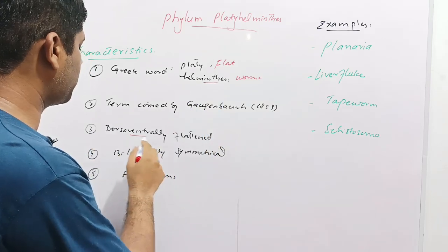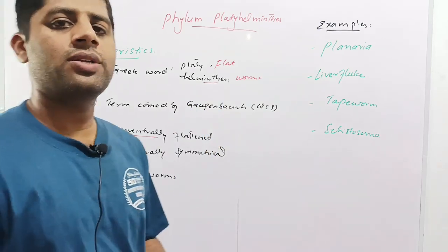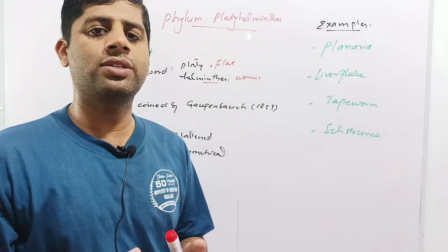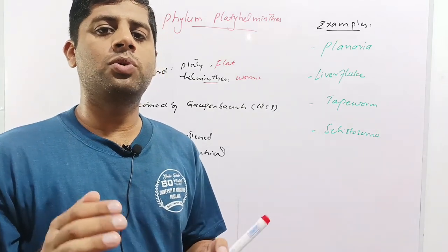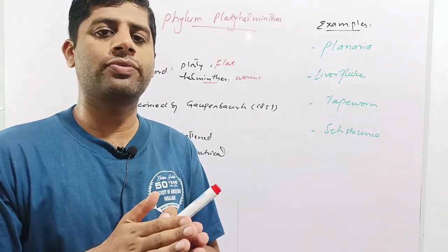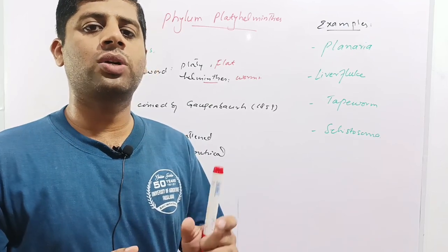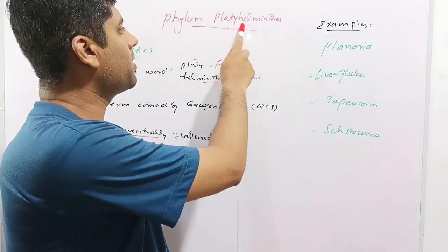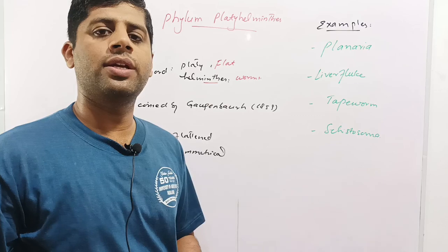These are dorsoventrally flattened, meaning their dorsal surface or back surface and the ventral surface or abdominal surface are both flattened. So these are also called flatworms. The term Platyhelminthes was coined by Gegenbaur in 1859.